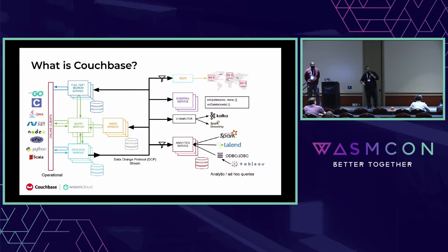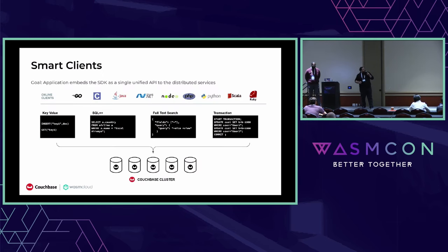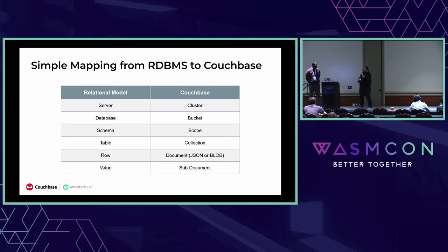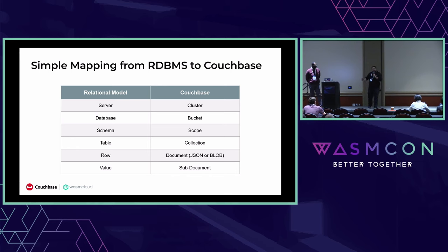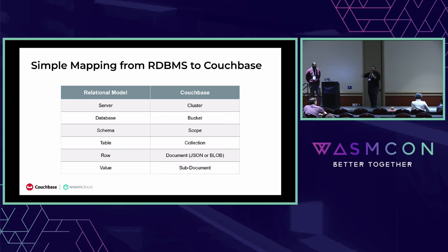If you want to talk about Couchbase more, I'll be at the Cosmonic booth all day. Basically, this is how we store things in Couchbase — and that's important for the workshop. We have a SQL database but we store JSON documents, so it's not a relational database. There is no table and primary key; it's just collections on which you store JSON, and we allow you to run SQL queries on those JSON documents. Our goal will be to connect to a bucket, scope, and collection and start writing and reading documents using WebAssembly.